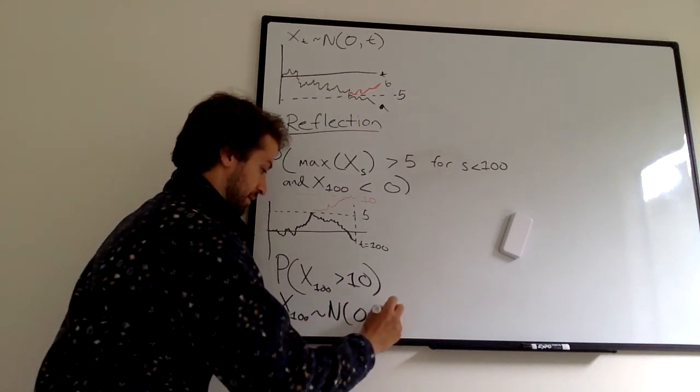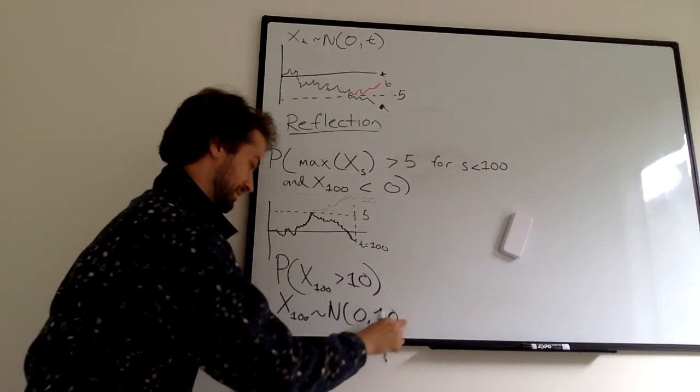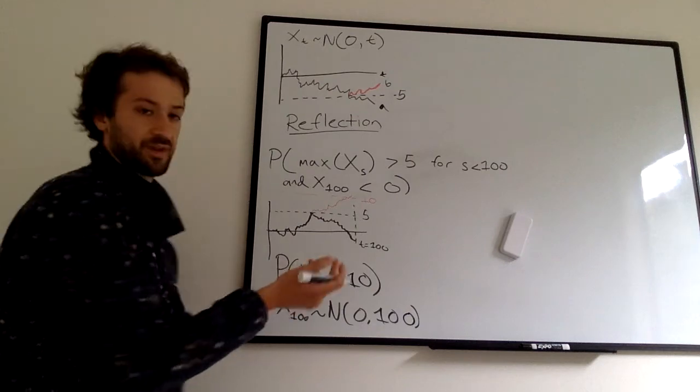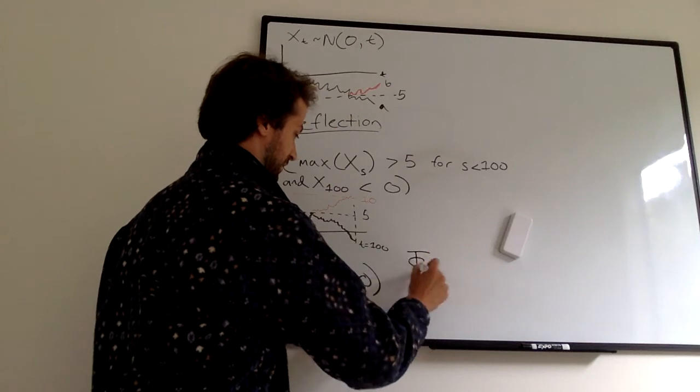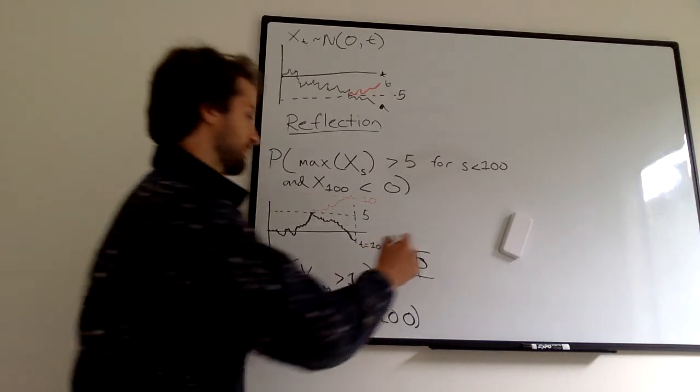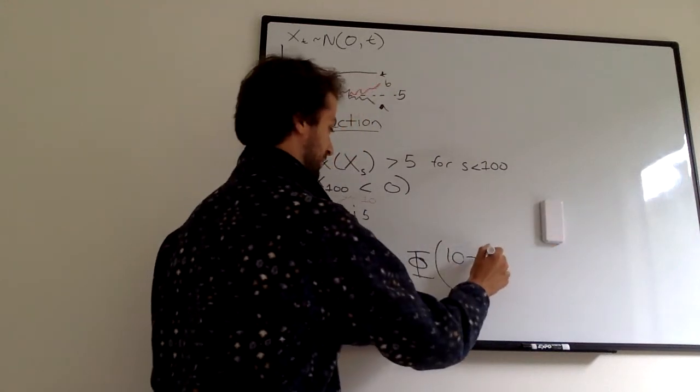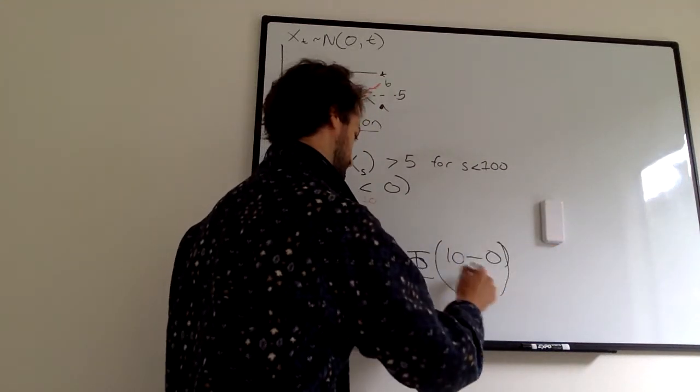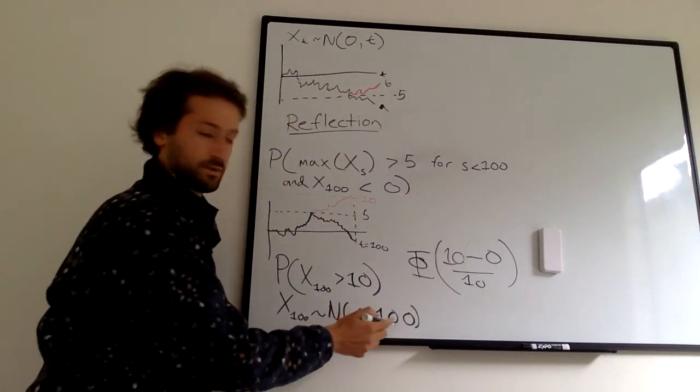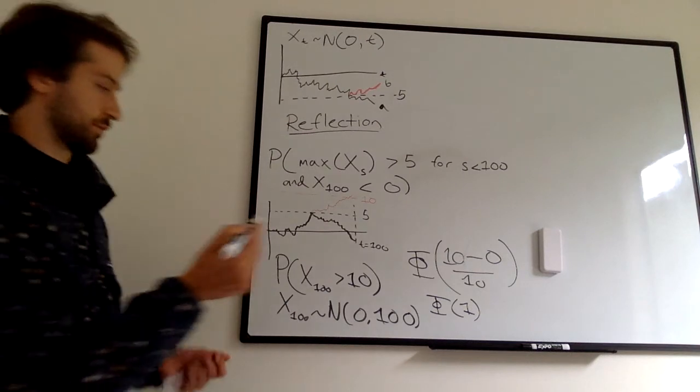We know that x sub 100 is just a normal distribution with mean zero and variance 100. We just have to find the probability that this normal distribution is above ten. This is something you've done since AP statistics. This is phi, the shorthand for the CDF cumulative distribution function of a normal distribution. We have to find phi of 10, which is the value you want to end above, minus zero which is the mean of the normal, all divided by 10 which is the standard deviation. This comes out to be phi of one, and we're doing one minus because we want the probability of being above.